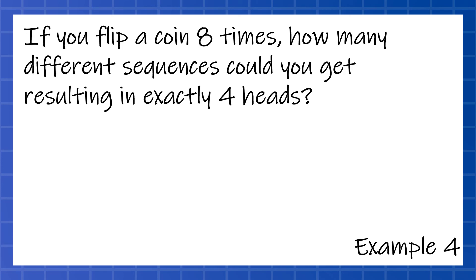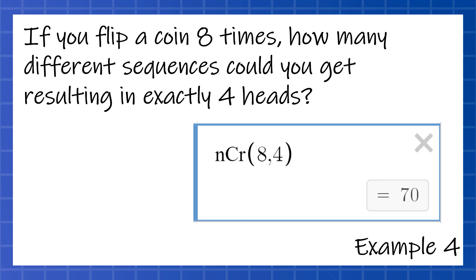Last example — this one sounds a little weird, but I want to walk you through it. If you flip a coin eight times, how many different sequences could you get resulting in exactly four heads? For example, I could get heads, heads, heads, heads right off the bat and then four tails — that is one way. Or I could get heads, tails, heads, tails, heads, tails and just alternate. There's a bunch of different ways I could get it. But all this is is a combination — we have eight different options and we're choosing four of them. So we end up with 70.